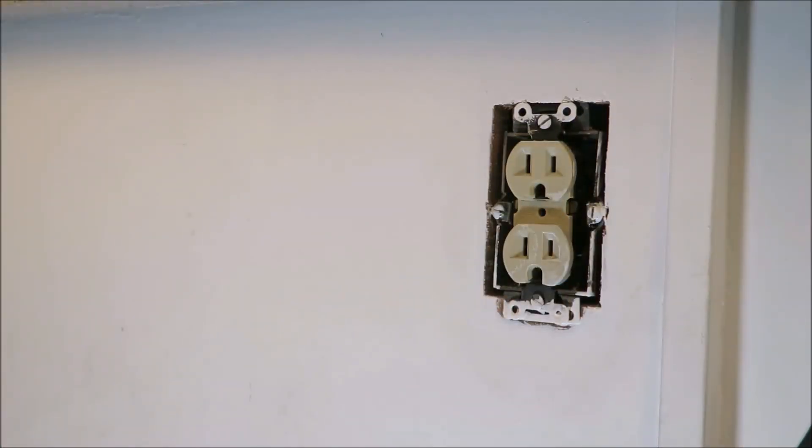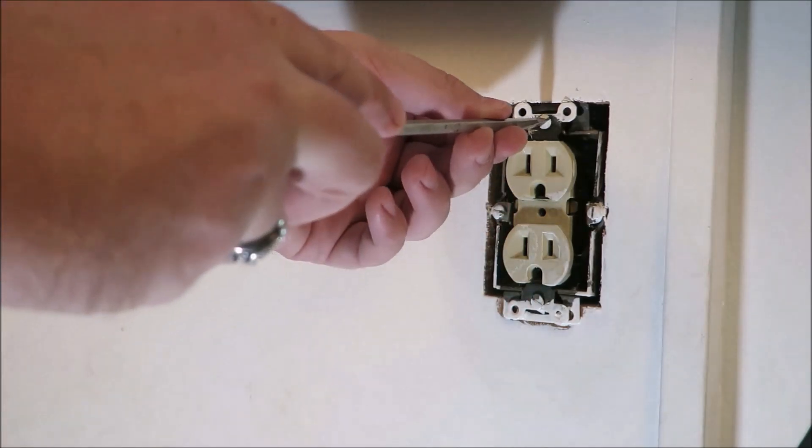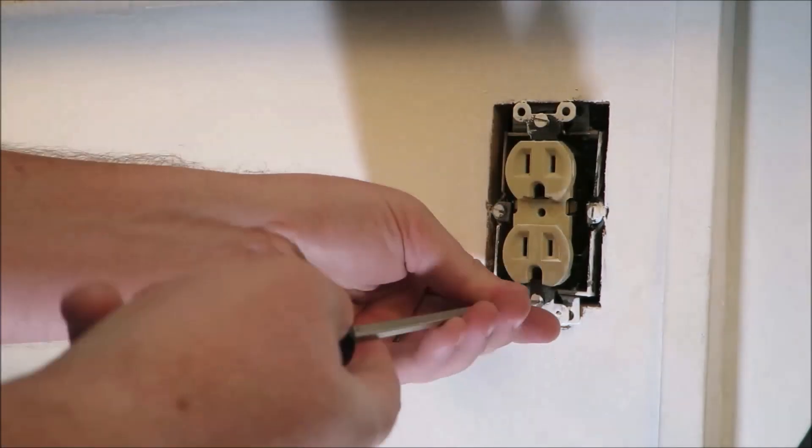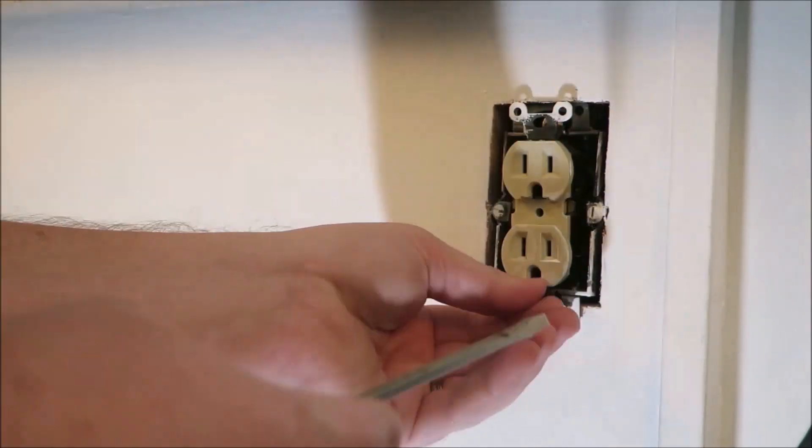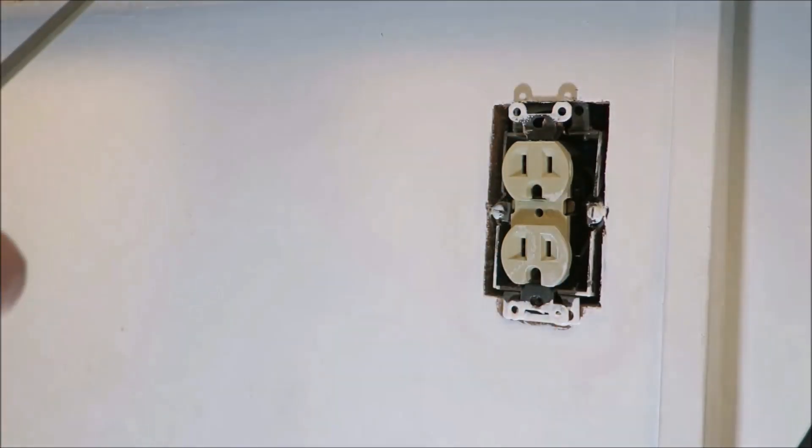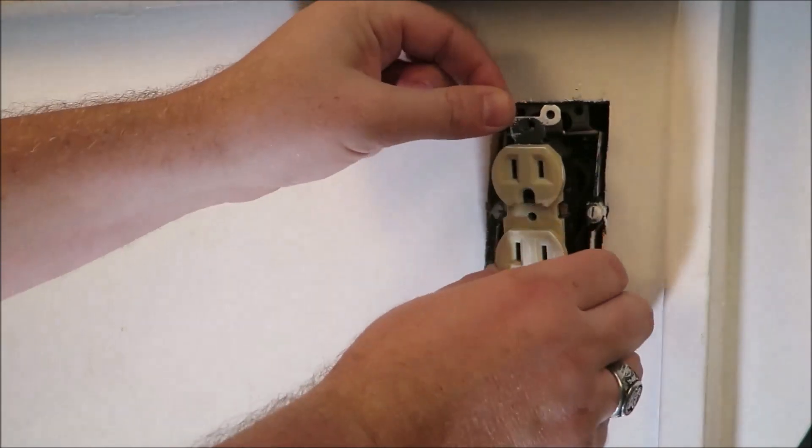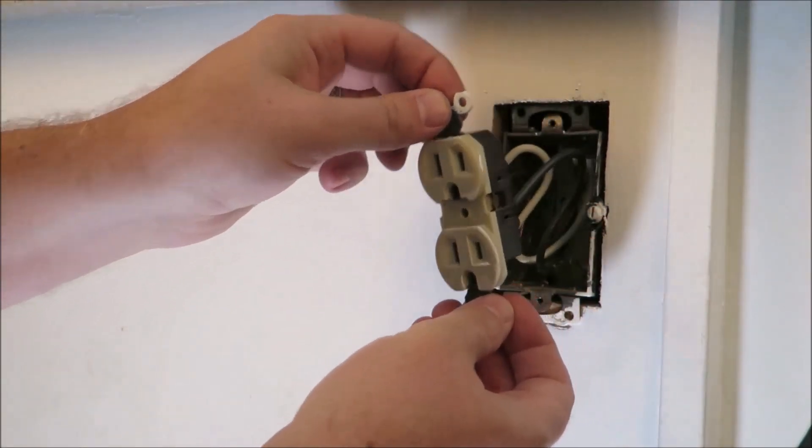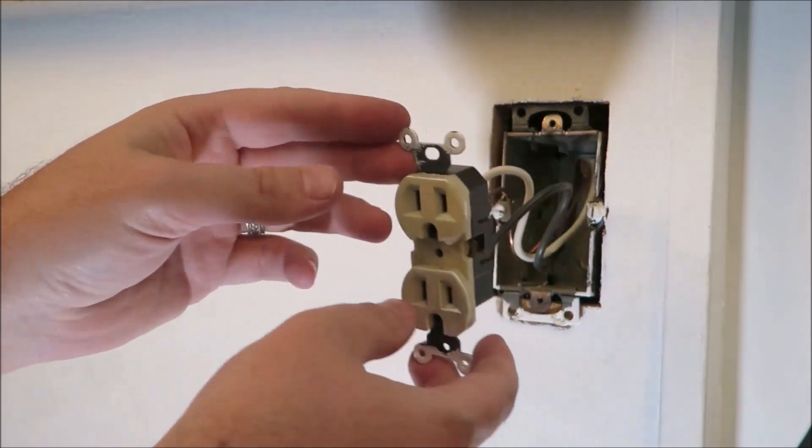Now that the panel is removed, we can take off the two other screws holding this piece up. All right, now the screws are out, you can go ahead and pull this forward. It's gonna be a little tight back here because the wires are stiff, but you'll be able to get it exposed.